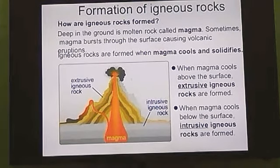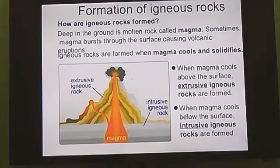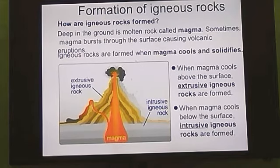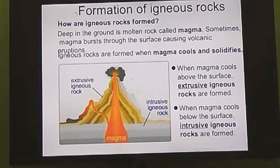Let us discuss the formation of igneous rocks. Deep inside the earth, molten rock is present, which is called magma. When it remains underground, it is called magma. Sometimes this magma escapes and comes out to the surface with great pressure — when it comes out, it is called lava, and this process is called volcanic eruption. During volcanic eruptions, molten rocks come out in liquid form and gases escape into the atmosphere. Igneous rocks are formed when magma cools and solidifies, either above or below the surface.